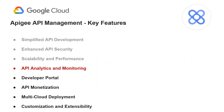Next comes API analytics and monitoring. Apigee provides comprehensive analytics and monitoring capabilities that offer insights into API usage, performance, and user behavior. With dashboards, alerts, and reports, organizations can monitor and analyze API traffic, identify and troubleshoot issues, and optimize API performance based on real-time data.